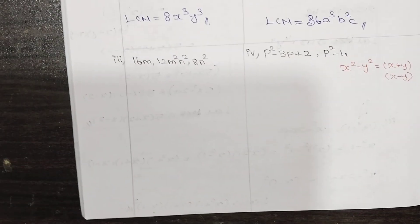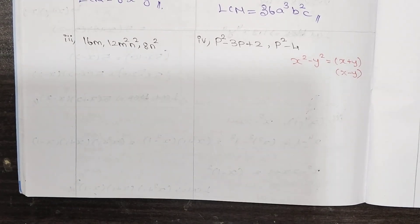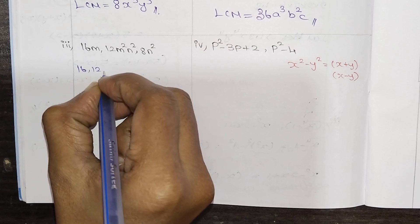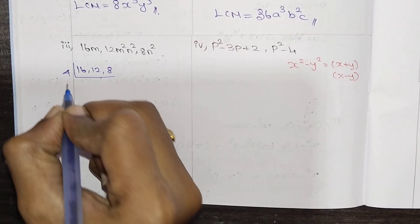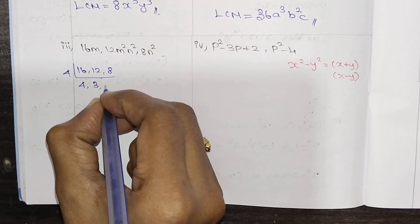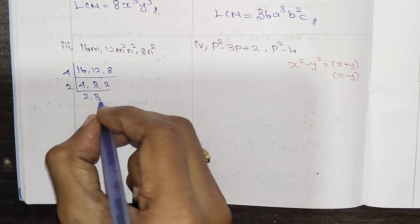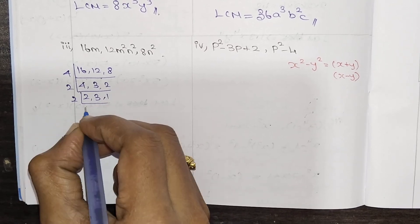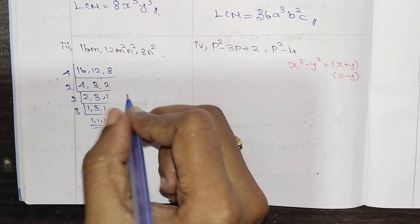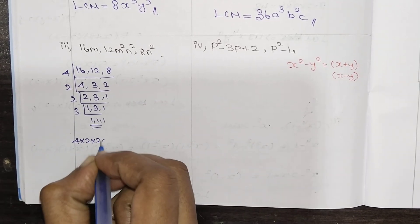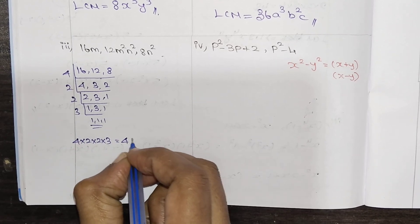The third sum is 16M, 12M², 8N². First, the numbers: 4 table — 4 is 16, 3 is 12, 2 is 8. So 2 table is 4. 2, 2 is 4. 3 is 3. So 3 is 1, 2 is 2. Now 2 is 1, 2 is 2, 2 is 1. LCM numbers: 4×2×2×3 = 3, multiply 4×2 = 8, 8×2 = 16, 16×3 = 48.